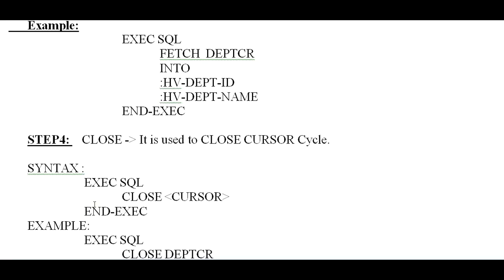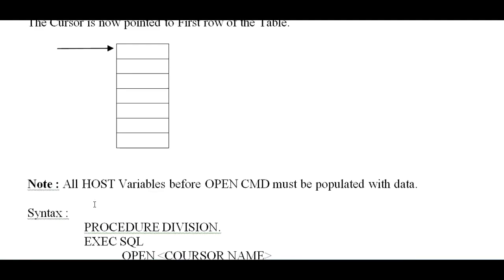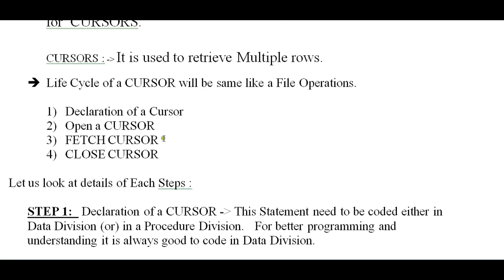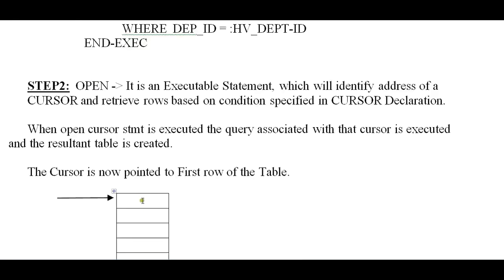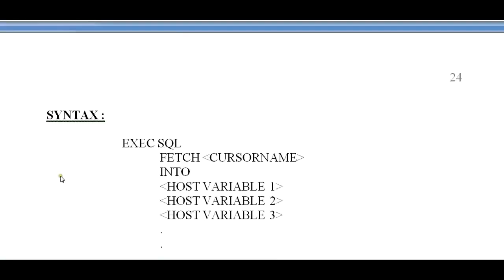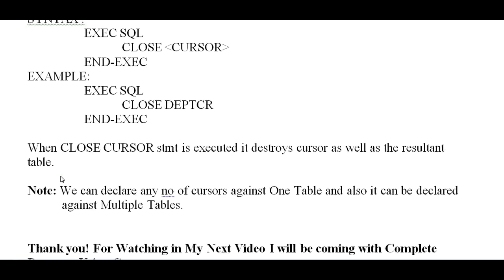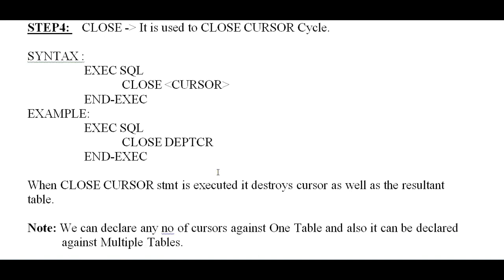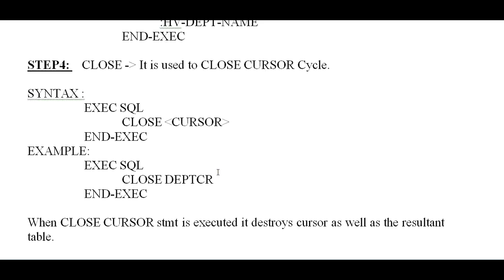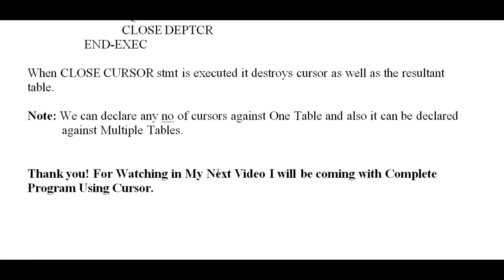These are the four steps in the lifecycle of a cursor: declare a cursor, open a cursor, fetch a cursor, and close a cursor. This is very important when working with DB2. You can declare any number of cursors against one table, and they can also be declared against multiple tables. In my next video, I will explain a complete program using cursors. Thank you so much for watching — stay tuned to Mainframe DB2 Tutorials. Have a great day!